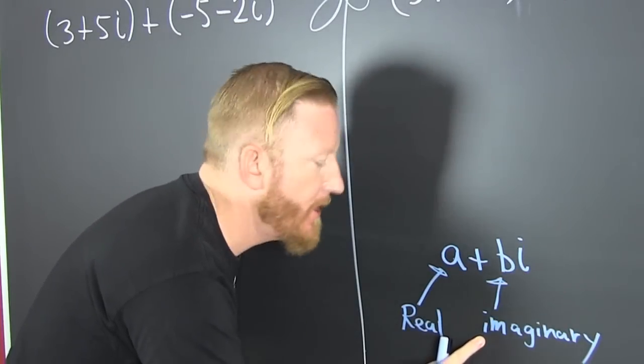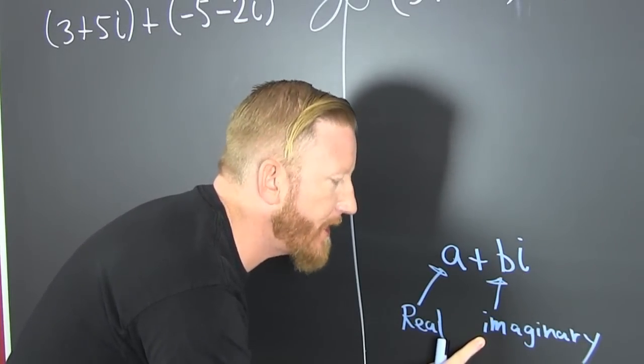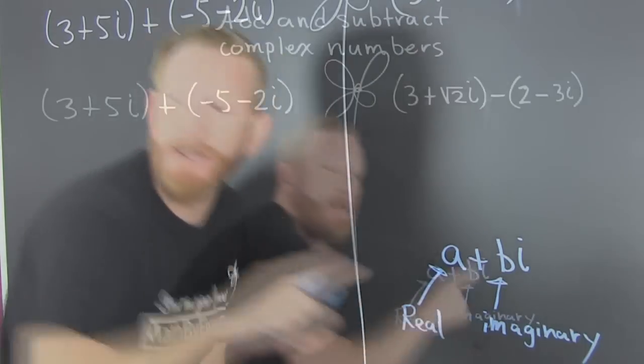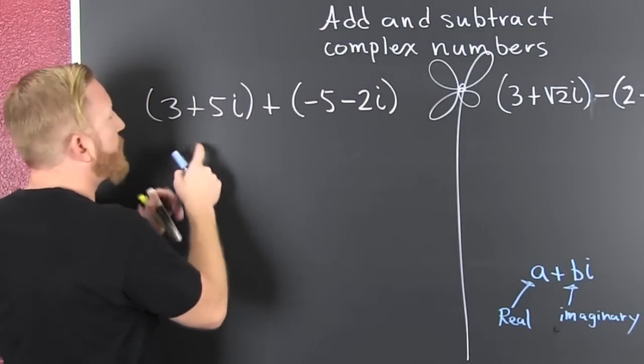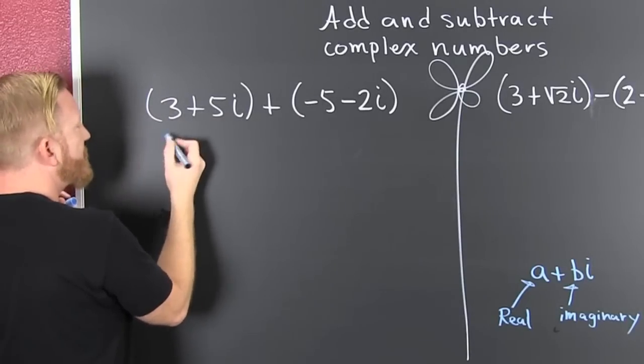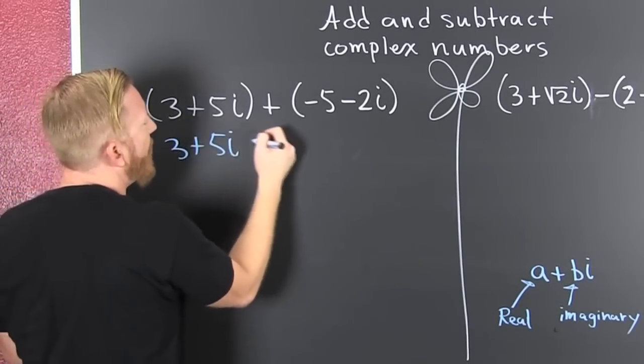So when I'm adding and subtracting complex numbers I'm gonna add the real parts and I'm gonna add the imaginary parts. I start with this example. Those parentheses are so unnecessary. That's three plus five i plus a minus five minus two i.